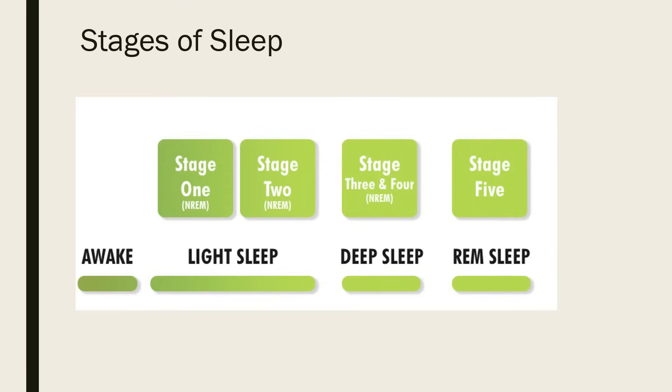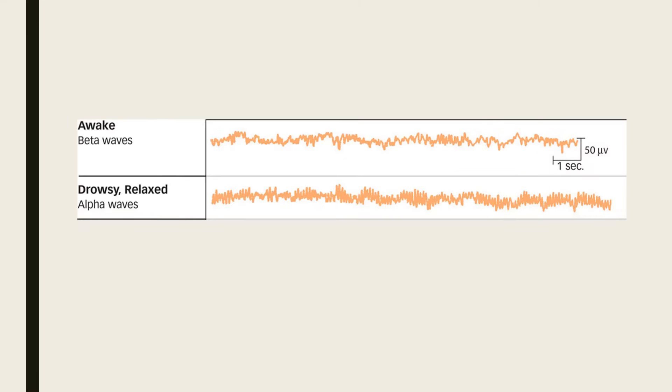Let's look at each stage of sleep in more detail in terms of brain activity present and other characteristics. When we are awake and alert our brainwave activity is predominantly high frequency beta waves. As we relax and become drowsy higher amplitude alpha waves appear.